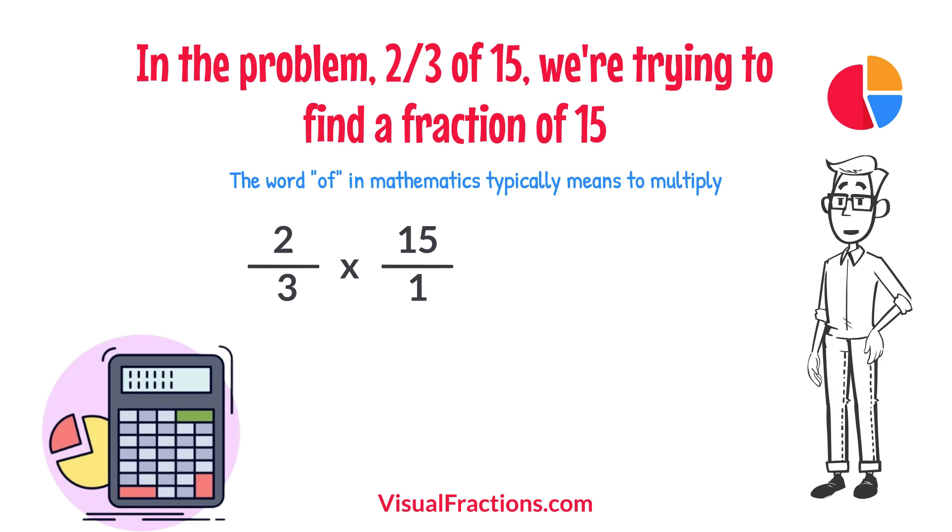Now, we proceed to multiply across. First, multiply the numerators, 2 times 15 equals 30.